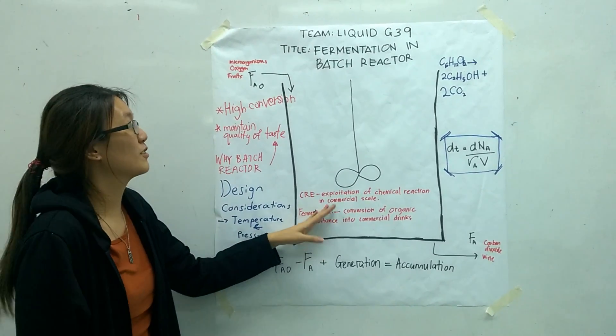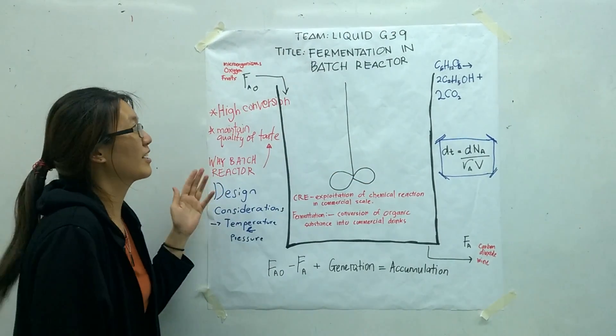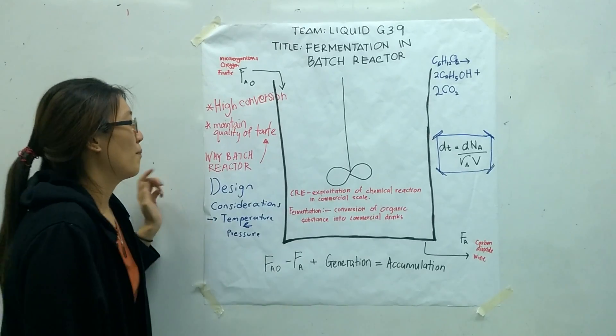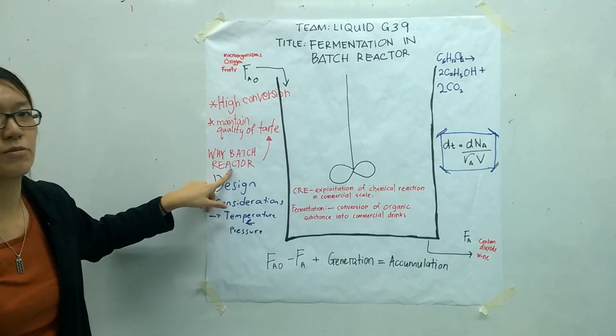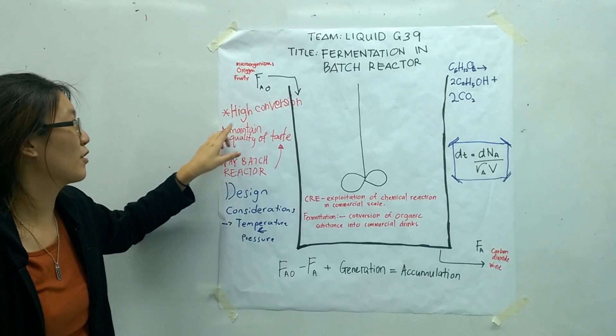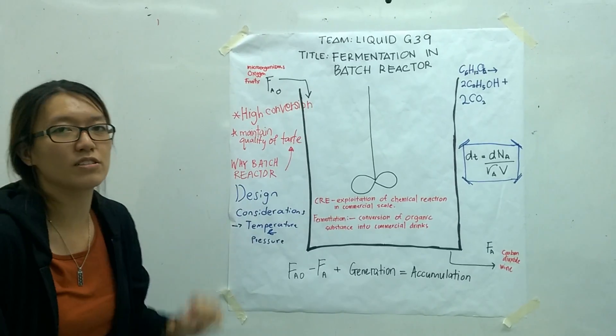For this fermentation reaction, we are actually using the batch reactor, means we are taking on batch process. But why are we using batch reactor? One of the reasons is because we wanted high conversion and to maintain the quality of the taste.